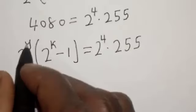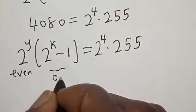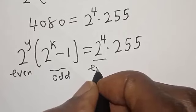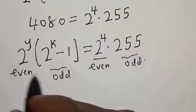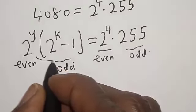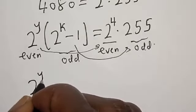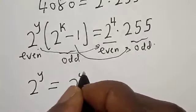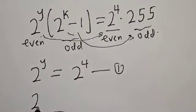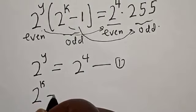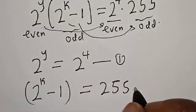Now, looking at this, 2 raised to power y is even, and (2 raised to power k minus 1) is odd. On the right side, 2 raised to power 4 is even and 255 is odd. By comparing the even and odd parts, 2 raised to power y equals 2 raised to power 4 — call this equation 1 — and 2 raised to power k minus 1 equals 255 — call this equation 2.